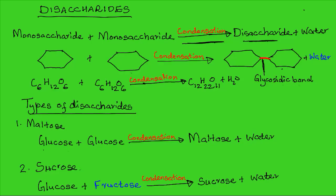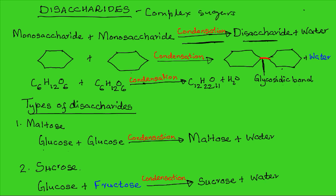Disaccharides are sugars made up of two molecules of monosaccharides. Disaccharides are considered to be complex sugars in the sense that they're formed from a combination of two monosaccharides. One monosaccharide plus another monosaccharide produce one disaccharide through the process of condensation.